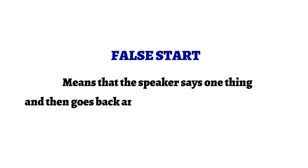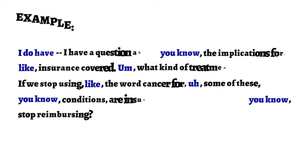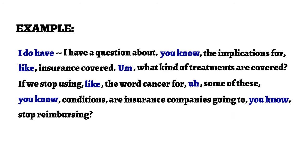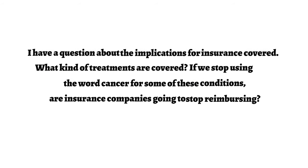A false start means that the speaker says one thing and then goes back and changes what they were saying. To make the speaker's message clearer, you don't have to include everything before the actual start of the sentence that is irrelevant. This is an example of a full verbatim — the words highlighted in blue are filler words, verbal tics, and false starts. Let's remove all the words highlighted in blue and full verbatim becomes clean verbatim.